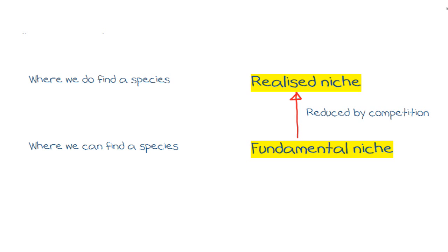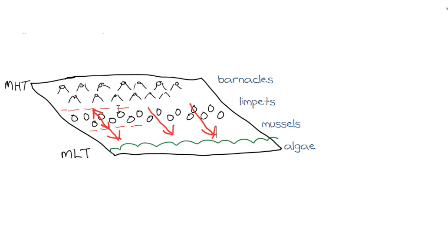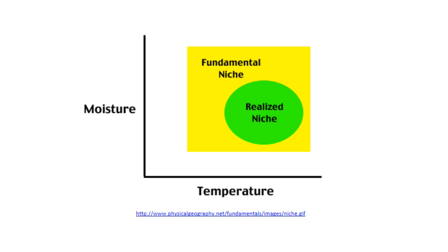For our seashore example, we can find limpets over quite a wide range — basically from here down to here. However, we do find them in a smaller range due to competition with the mussels. Biologists have shown some species interactions as shown here. You can see the larger fundamental niche where a species could be found and the smaller realized niche where they are found — in this case simplified to only be about moisture and temperature. You can see a species can tolerate a certain temperature but due to competition does not do so well; other species outcompete it there, but at another temperature it has the advantage — this is where we do find it.